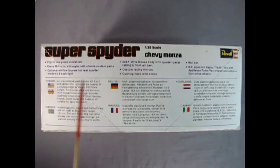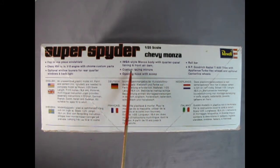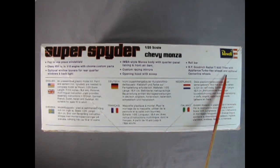It has an IMSA style Monza body with quarter panel fairing and front air dam, custom racing mirrors, opening hood with scoop, a roll bar, and BF Goodrich Radial T/A A50 tires with Appliance Turbo Vec wheels and optional Centerline wheels.